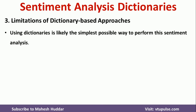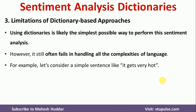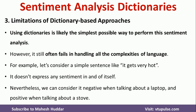Using a dictionary is likely the simplest way to perform sentiment analysis; however, it has several drawbacks. For example, consider the sentence 'It gets very hot.' If this is about a laptop, it is a negative sentiment. But if it is about a stove, it is positive. Without knowing the context in which the statement was made, it is very difficult to determine the correct sentiment.